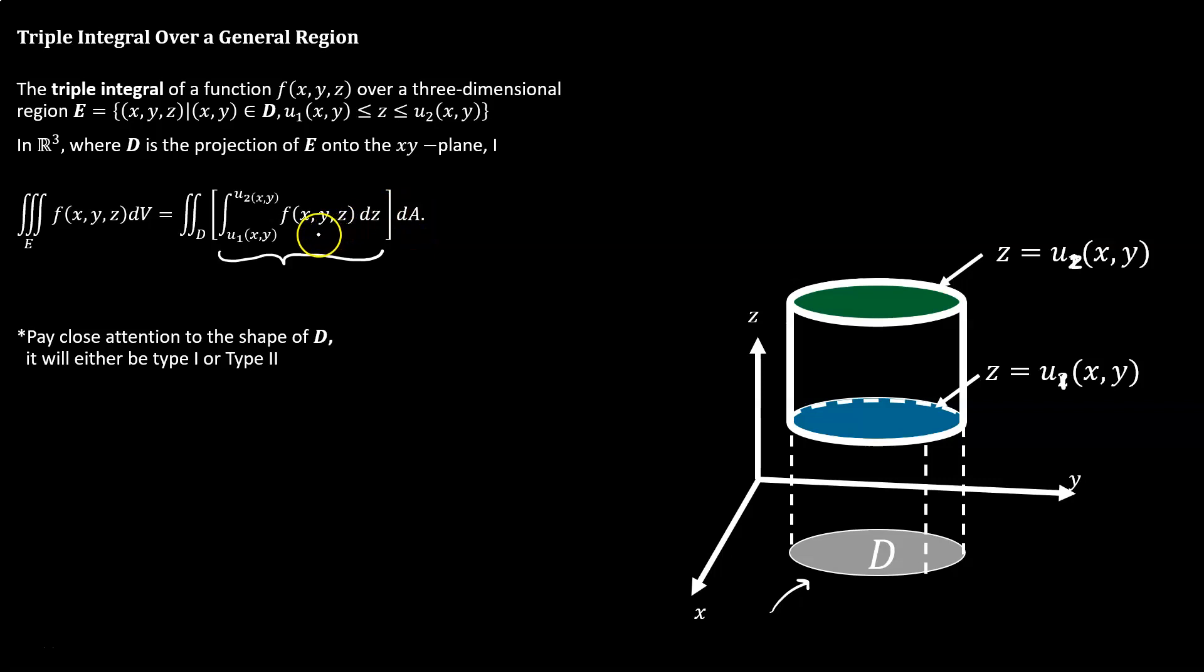But now inside of that, instead of just having a single function, we are adding in a third integral with respect to z in this case. And the bounds for the z values are between two potential functions, u1 and u2.